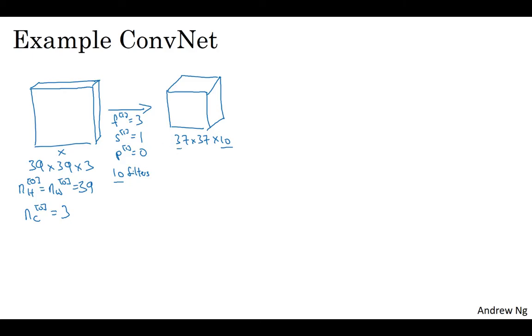And 37 comes from this formula: N plus 2p minus f over s plus 1. You have 39 plus 0 minus 3 over 1 plus 1, that's equal to 37. That's why the output is 37 by 37. It's a valid convolution, and that's the output size.